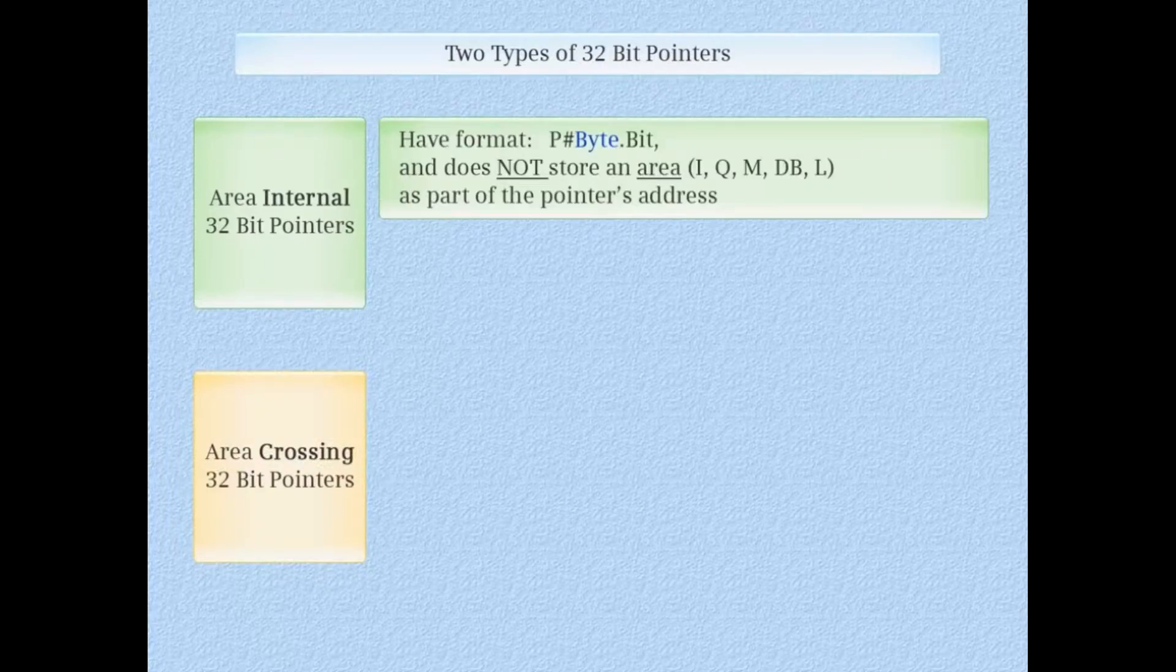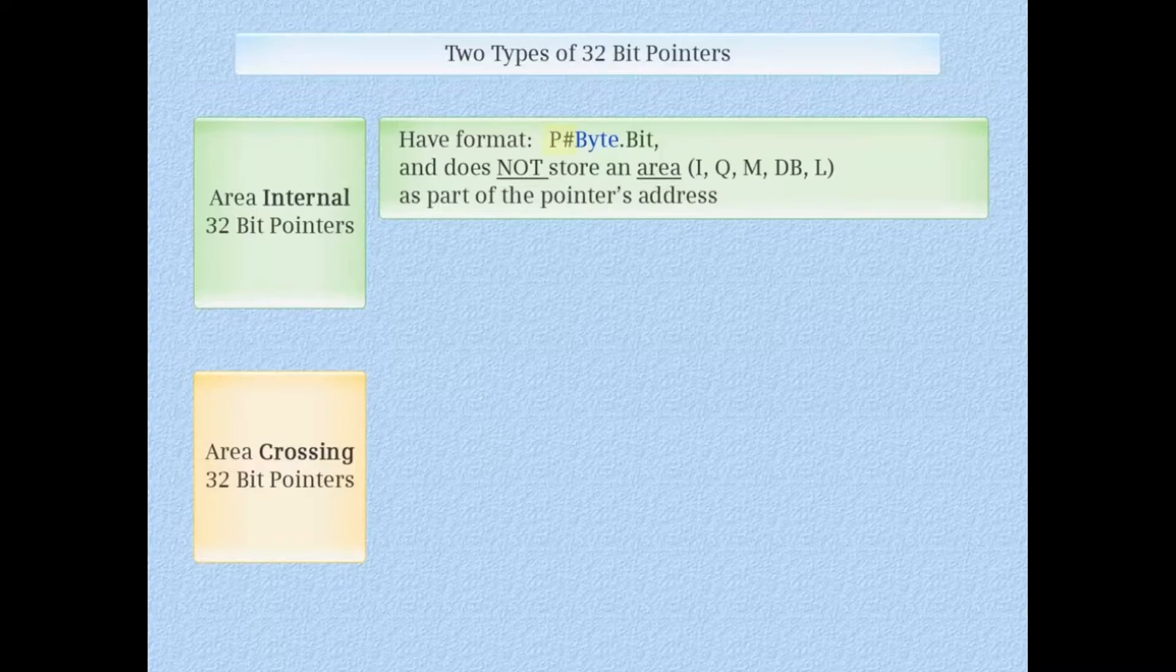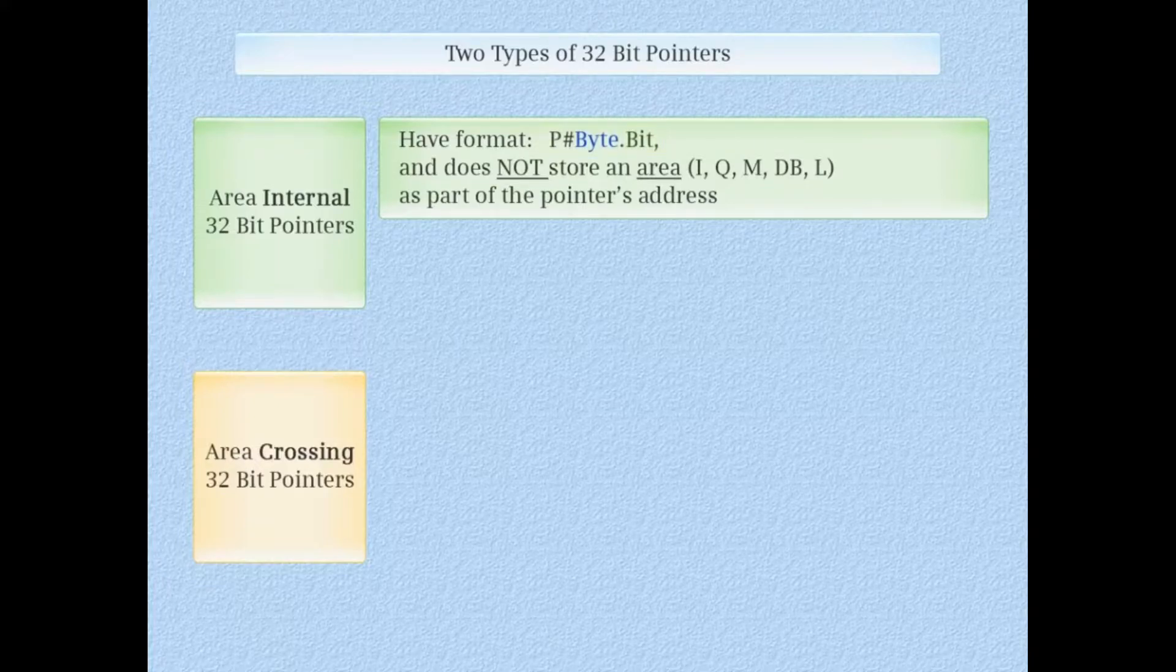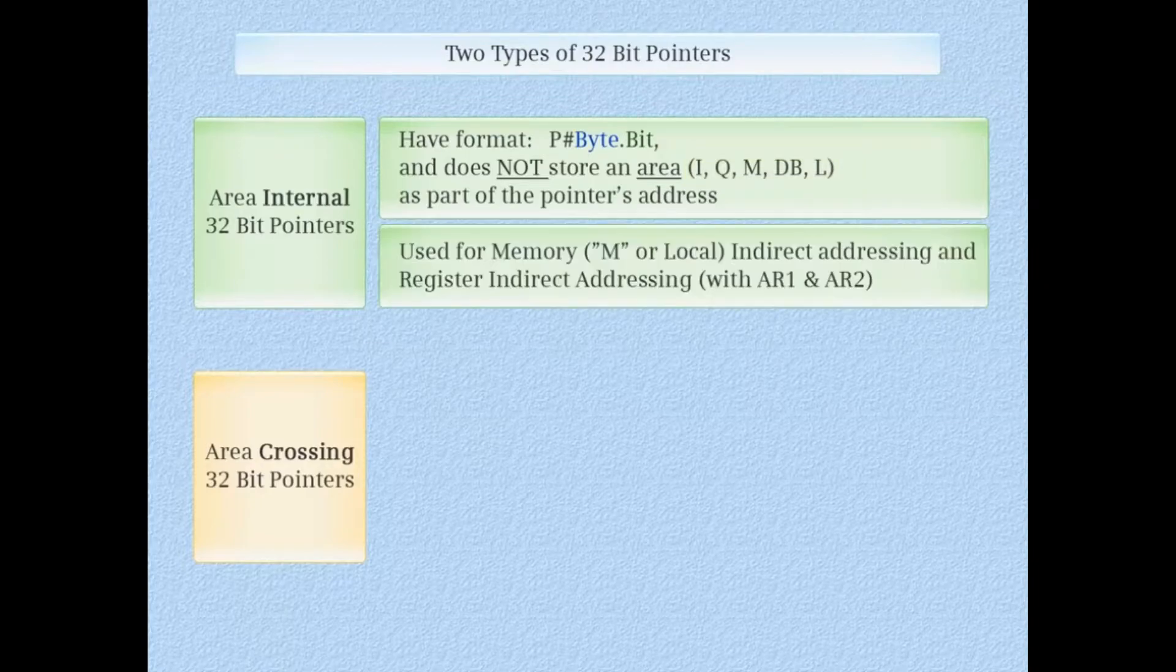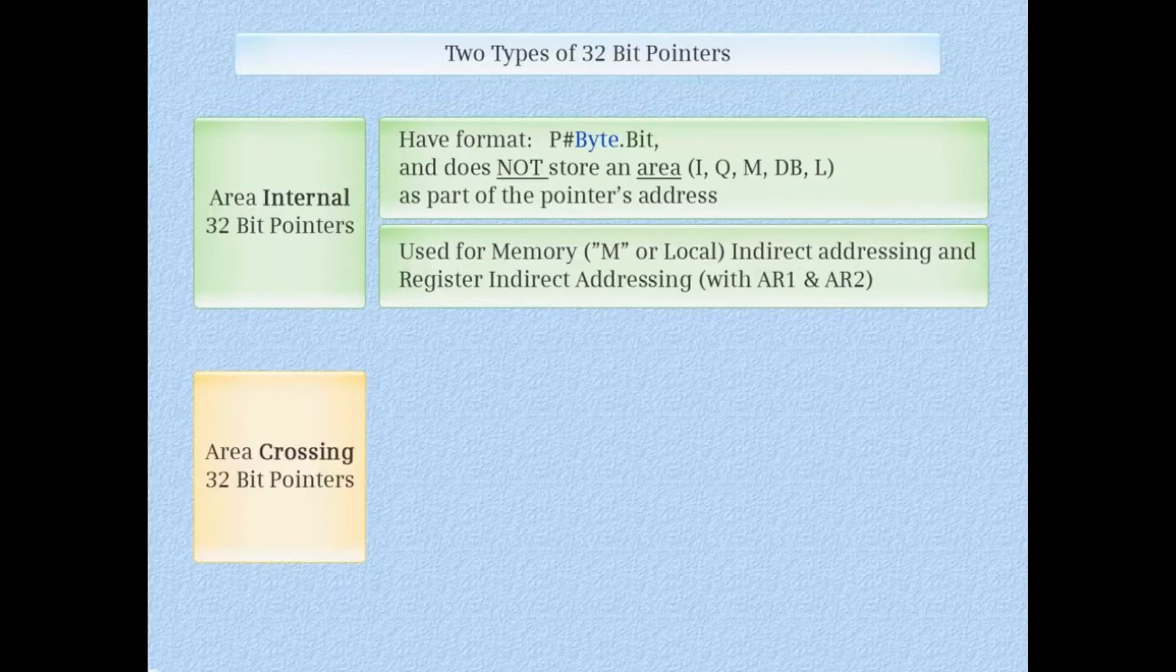Area internal pointers have the format P# byte address dot bit address. Area internal pointers do not contain an area such as input, output, memory, data block, or local as part of the pointer's address. Area internal pointers are used for indirect addressing which can use in-memory or local memory as well as the address registers AR1 and AR2.